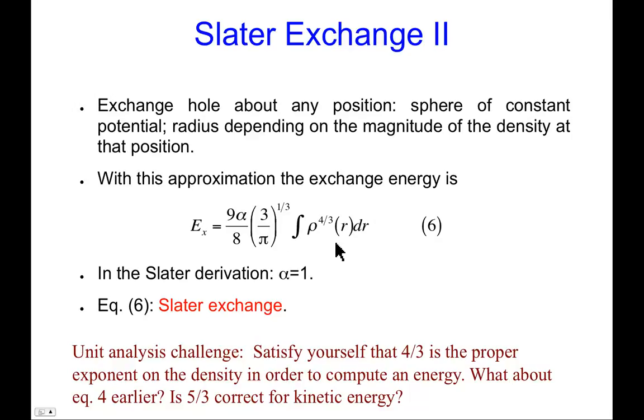And we'll make that a sphere of constant potential. And I'll expand that sphere out depending on the magnitude of the density at the position. And how will I do it? Well, I'll expand it out until it includes one electron's worth of density. And when you do that and you ask what is the exchange energy associated with that, you actually determine this expression. So this value α here in Slater's derivation is one. And I'll explain why I care about giving it a variable name a little bit later.